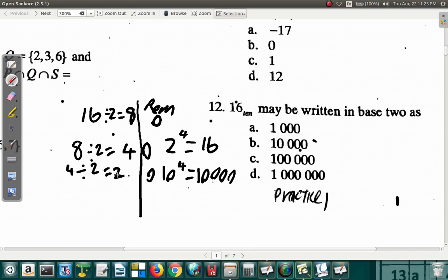Bring down the 8. 8 divided by 2 is 4, remainder 0. Bring down this 2. 2 divided by 2 equals 1, remainder 0. Bring down this 1. 1 divided by 2 equals 0, remainder 1. Then you read upwards: 1, 0, 0, 0, 0. That's 1 and 4 zeros.